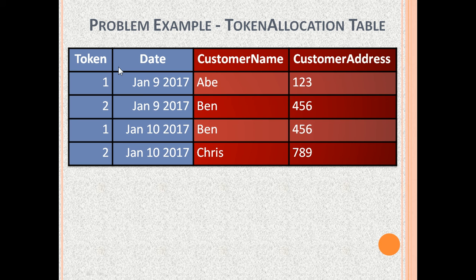A specific token allocated on a particular date is related to exactly one customer, so customer name depends on the candidate key. A specific token on a particular date is also related to exactly one customer address, but customer address also depends on customer name, which is not the key. So this table is not in 3NF.